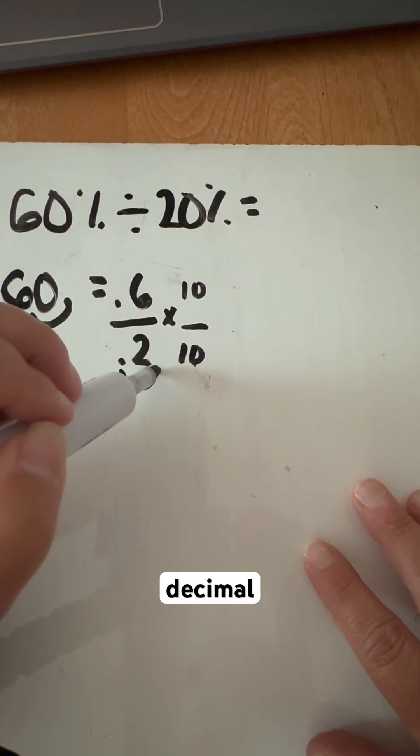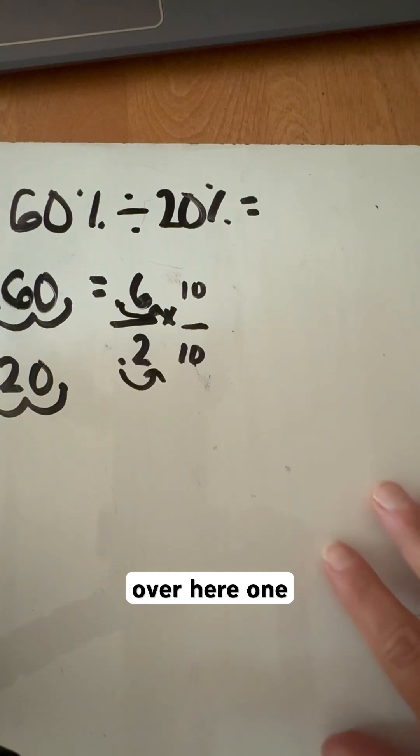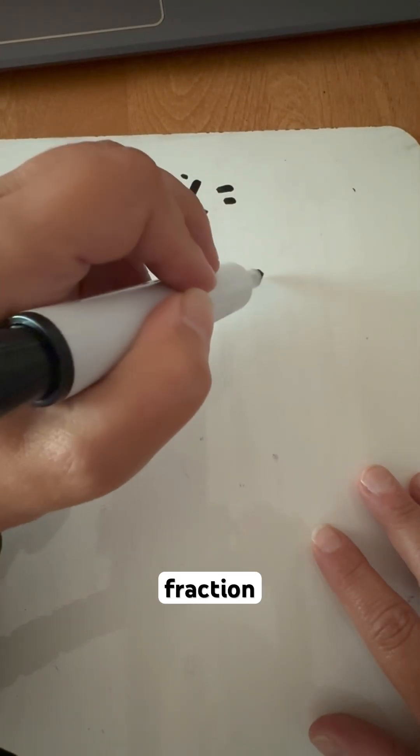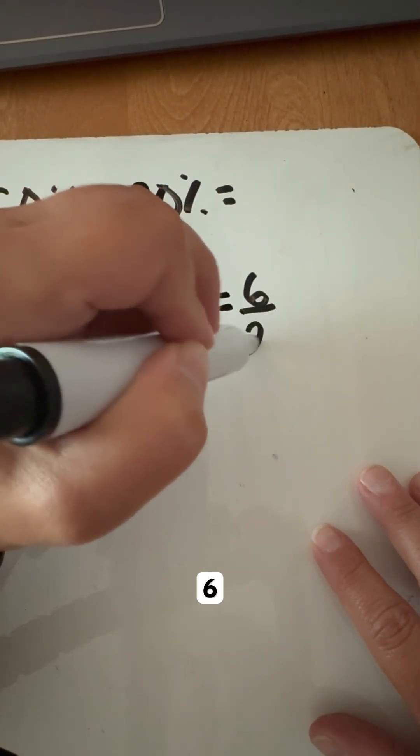So I'm going to move that decimal over here one, this number over here one, and that's going to give me a fraction of six over two.